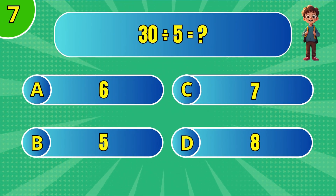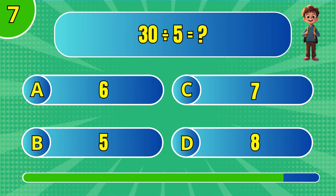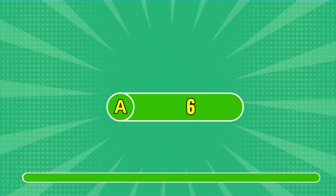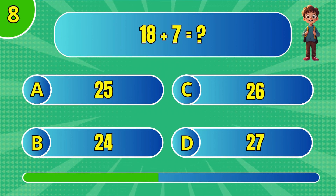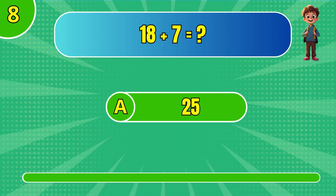What is 30 divided by 5? A: 6. What is 18 plus 7? A: 25.